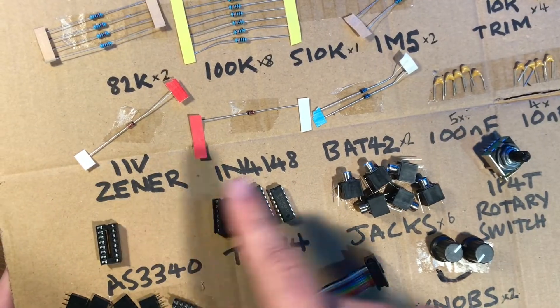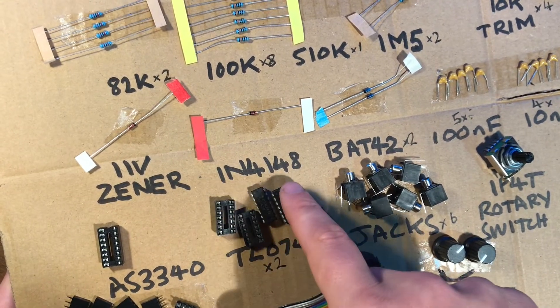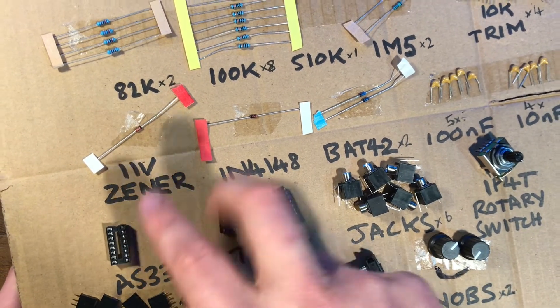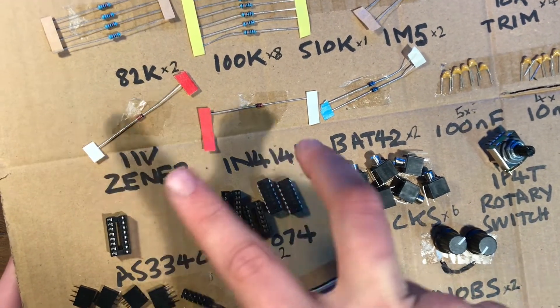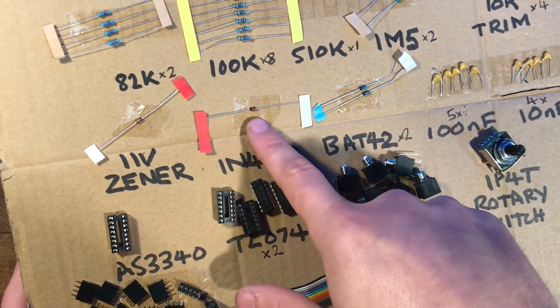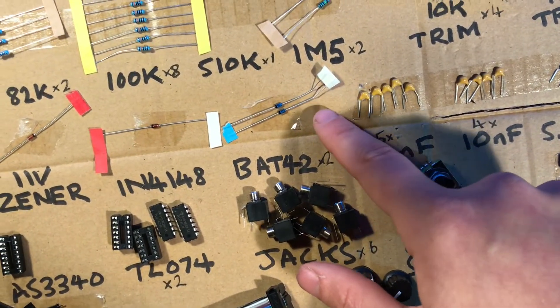A few different types of diodes. We've got your very standard signal diode, 1N4148. We've got an 11 volt Zener diode. These two look a bit similar so try to keep them apart so you don't get mixed up. It does say quite clearly on here what it is. And you've got your BAT42 Schottky diodes.